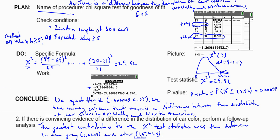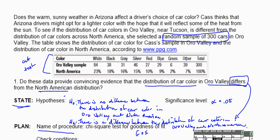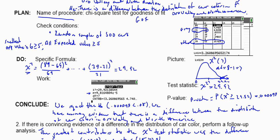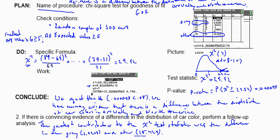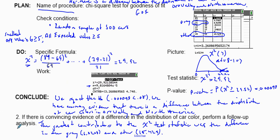I hope this helps you understand how to use the chi-square goodness of fit test and how to go through the entire four-step process: State, Plan, Do, and Conclude — including a follow-up analysis of which category contributes the greatest difference. Good luck and God bless.